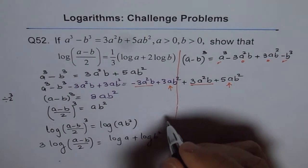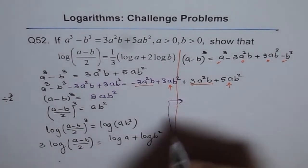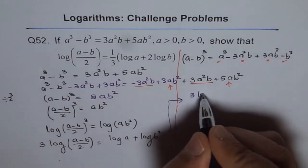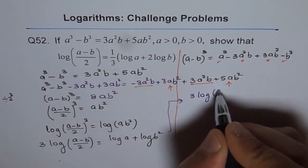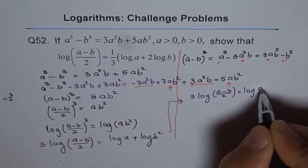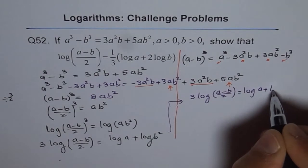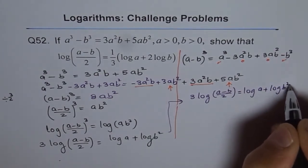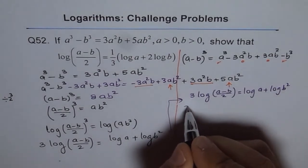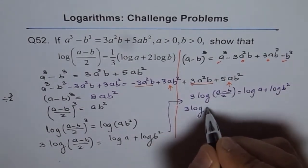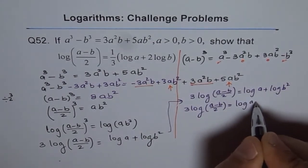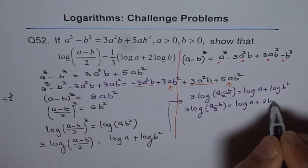So, let me rewrite this equation first for you. It is 3 log of a minus b over 2 equals to log a plus log b square. Now, b square can be written as 2 log b. So, we have 3 log of a minus b over 2 equals to log of a plus 2 log b.